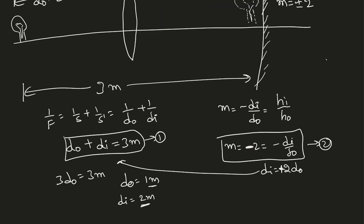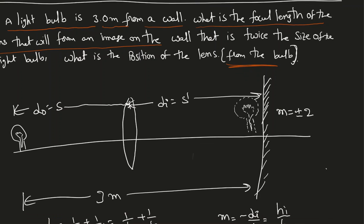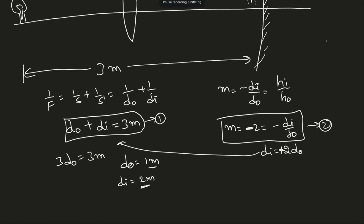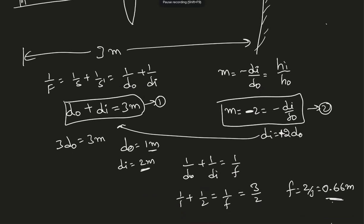The question asks for the position of the lens, which is the distance of the object — 1 meter from the light bulb. Now finding the focal length using 1/d-naught + 1/d-i = 1/f: so 1/1 + 1/2 = 1/f, which gives 3/2 = 1/f, so f = 2/3 ≈ 0.67 meters. That is the focal length.